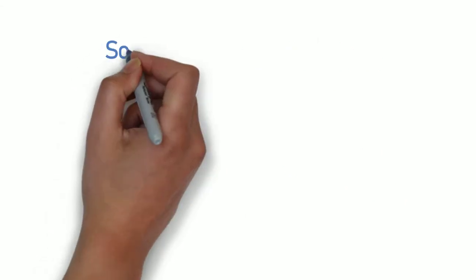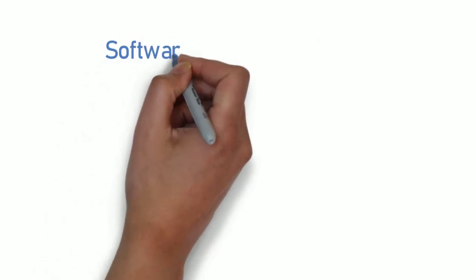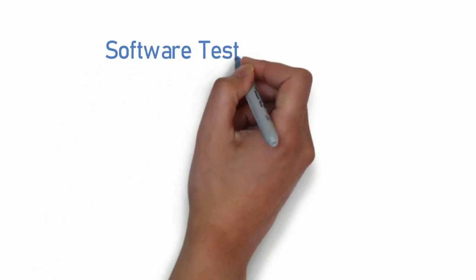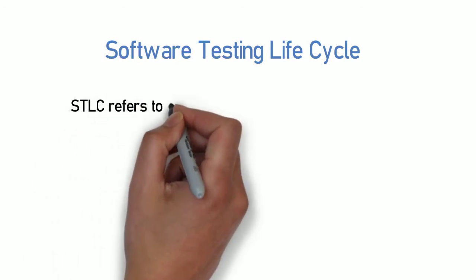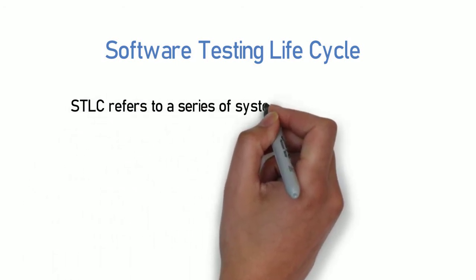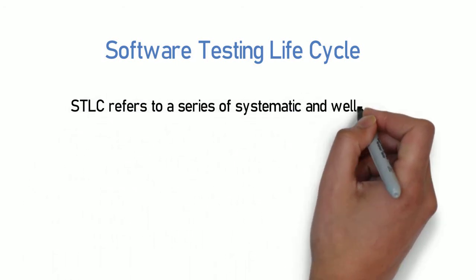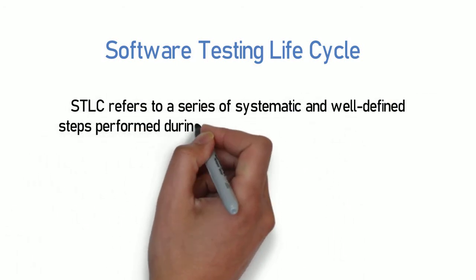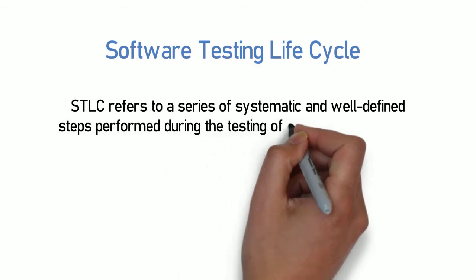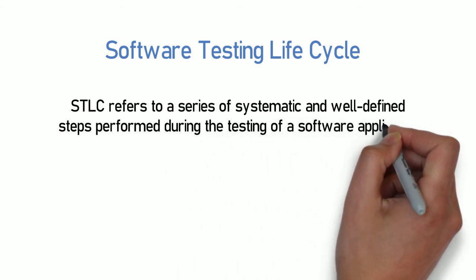Now, let's check its formal definition. Software testing life cycle, or STLC, refers to a series of systematic and well-defined steps performed during the testing of a software application.